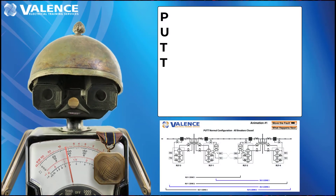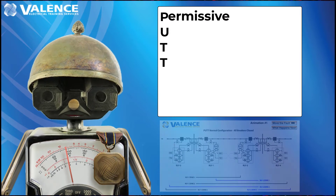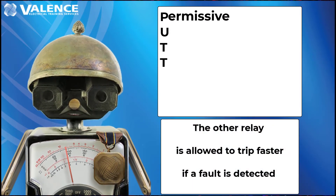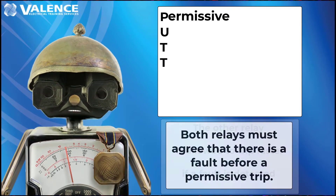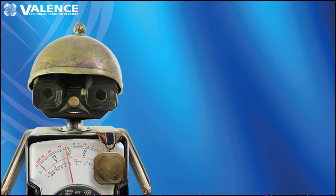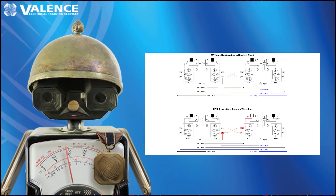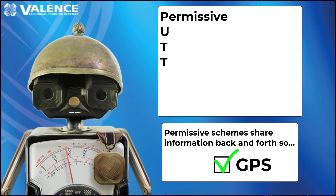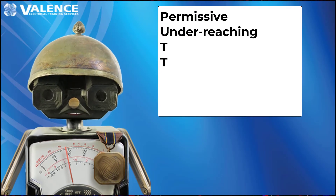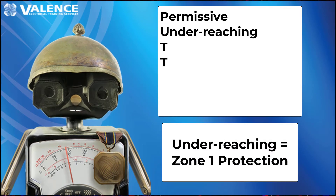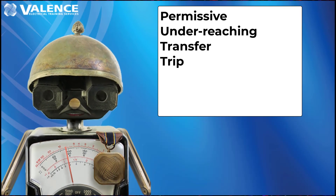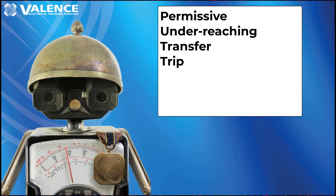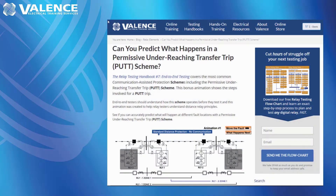Today we're looking at a PUTT scheme, and the P stands for permissive. A permissive scheme tells the other relay that it is allowed to trip faster if it also detects a fault in the correct direction. Both relays must agree that there is a fault before a permissive trip, unlike the direct scheme that would send a trip signal if only one relay detected a fault. Permissive schemes share information back and forth, so you will need your fancy GPS and/or iRig connected equipment on all sides of the line. The U stands for underreaching, so at least one relay must measure a Zone 1 fault for this scheme to work. TT means that one relay is sending a transfer trip signal to the other. We're looking at a PUTT animation available at RelayTraining.com — there should be a link on screen and in the description below.